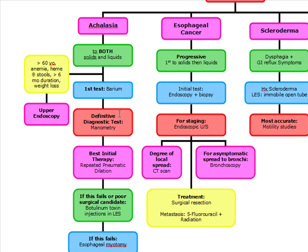If a patient has certain risk factors — including age over 60, anemia, heme-positive stools, symptoms over six months duration, or weight loss — you're going to do an upper endoscopy. Why? Because we're going to be searching for cancer. So if they have no risk factors, we do a barium and confirm it with manometry.